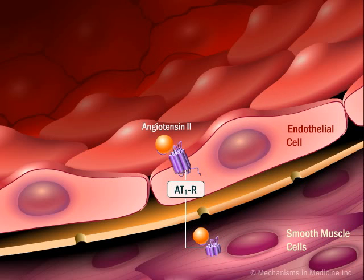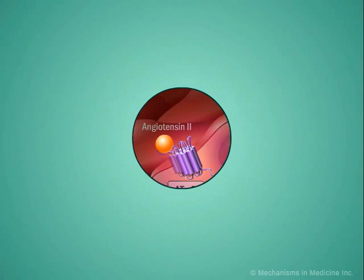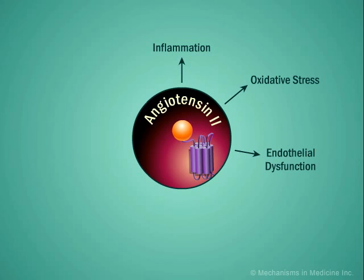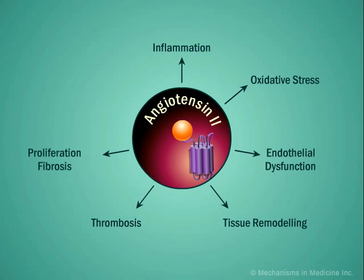Stimulation of the AT1 receptor by angiotensin II activates multiple intracellular signaling pathways that promote atherosclerosis. These pathways include inflammation, oxidative stress, endothelial dysfunction, tissue remodeling, thrombosis, proliferation fibrosis, and autostimulation.